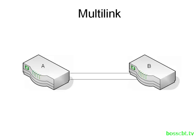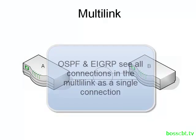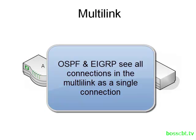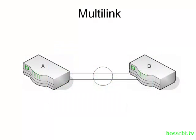For instance, here we have two serial connections between routers A and B. Now if OSPF or EIGRP are running on these routers, without multi-link they'll see both of the connections, and they might load balance over both of them if the costs are appropriate, or they may prefer one link over the other. However, when we enable multi-link, our routers only see a single connection. So those two circuits, when configured with multi-link, now become one circuit in the eyes of a layer 3 routing protocol like OSPF or EIGRP.